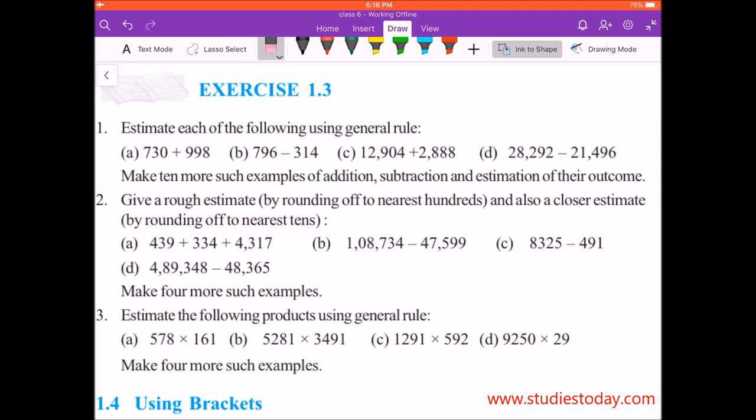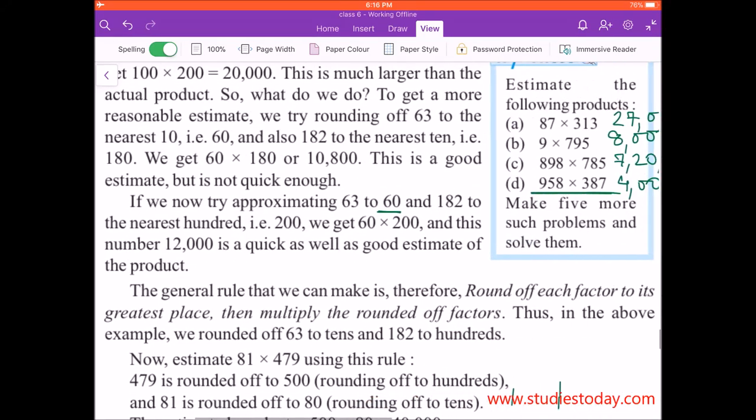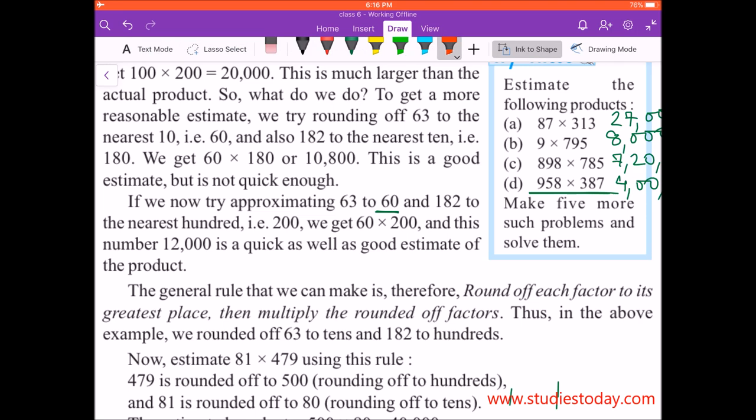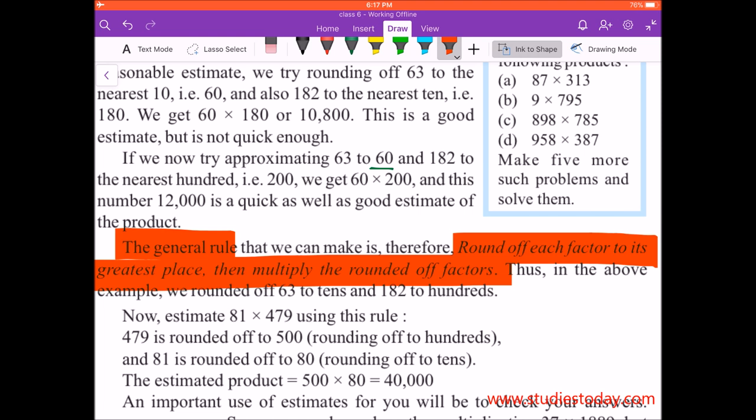Hello students, today we'll discuss Exercise 1.3 Question Number 3, which is based on finding the product using general rule. Let me quickly go to the definition of general rule. The general rule says that you round off each factor to its greatest place and then multiply the rounded off factors.